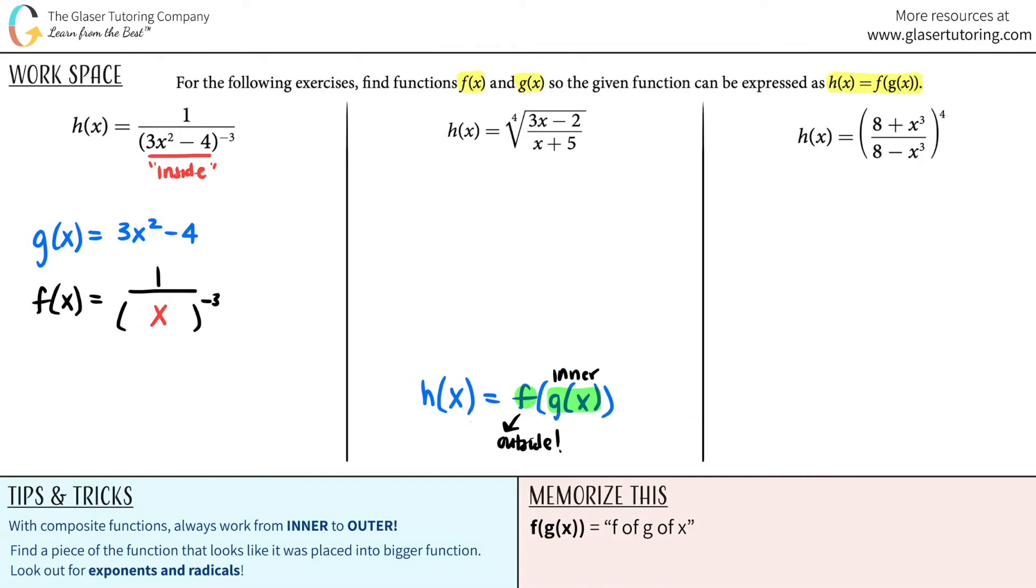Now, I just want to say that we're using x here because it was x. But let's just say that there was like an s here, you would have to put an s. All right. And then you just got to make it pretty. So we'll say f of x equals 1 over x raised to the negative third. And that's it. There's your two functions. Finding the inner function is the hardest one. But just think of what is trapped or inside something else.